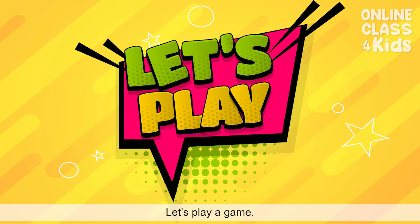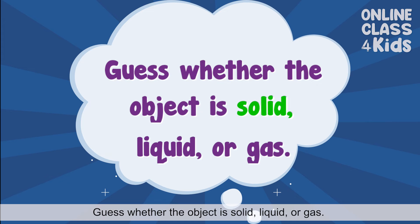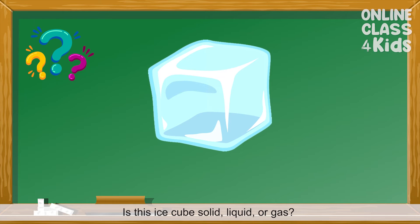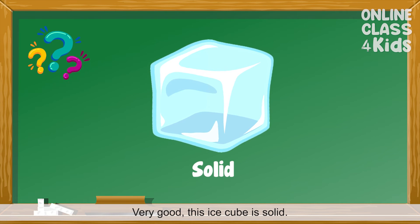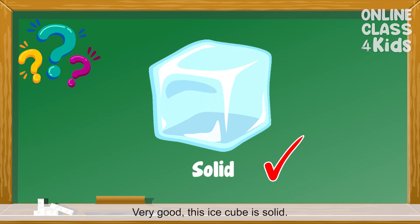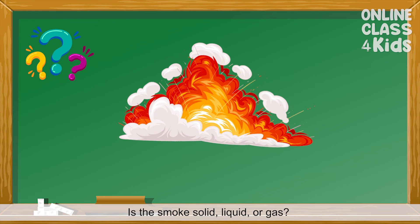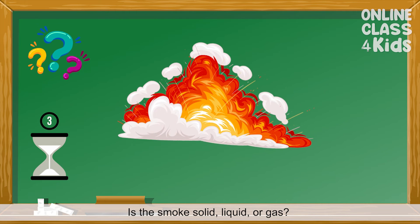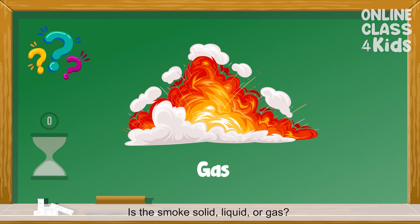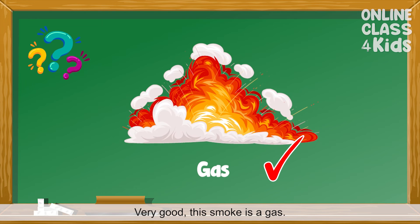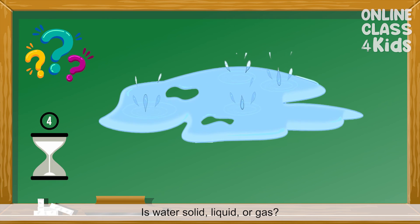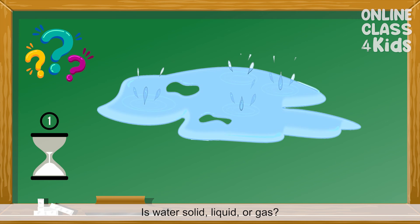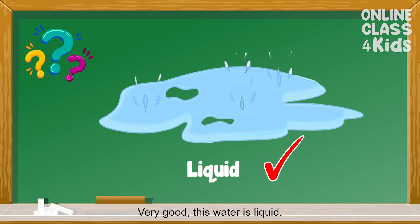Let's play a game. Guess whether the object is solid, liquid, or gas. Is this ice cube solid, liquid, or gas? Very good! This ice cube is solid. Is the smoke solid, liquid, or gas? Very good! This smoke is a gas. Is water solid, liquid, or gas? Very good! This water is liquid.